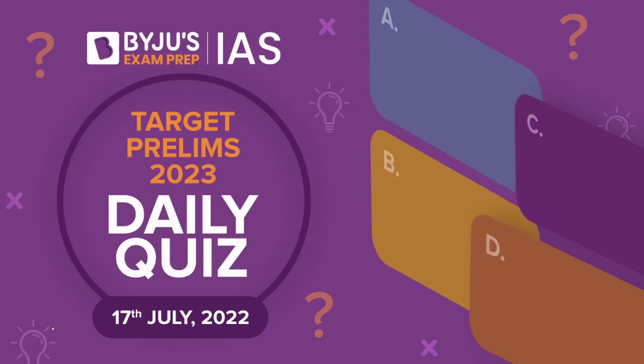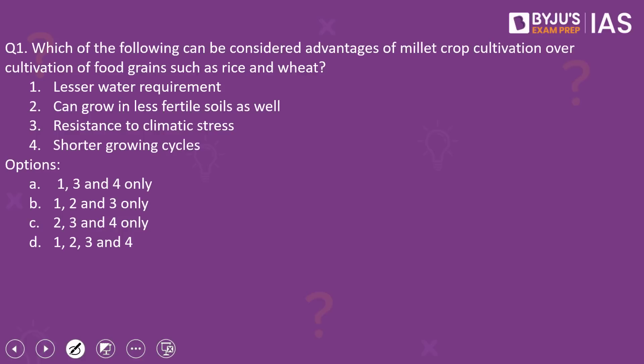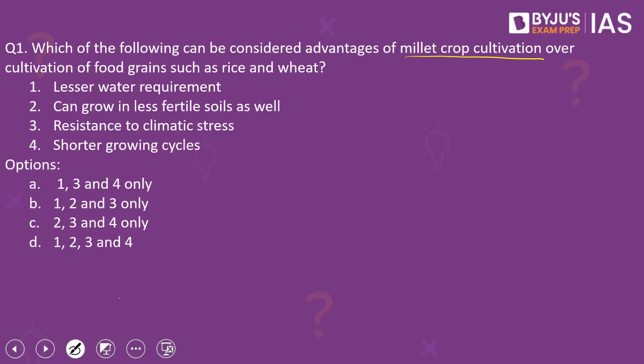Hello and welcome to Baiju's exam prep IAS. Welcome to the daily quiz discussion for the 17th of July 2022. Beginning with the first question of the day: which of the following can be considered advantages of millet crop cultivation over the cultivation of food grains such as rice and wheat? The four statements given are: lesser water requirement, can grow in less fertile soils, resistance to climatic stress, and shorter growing cycles. Please have a look at the options given.